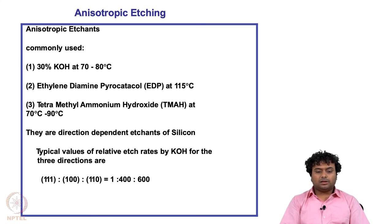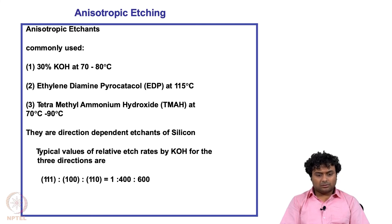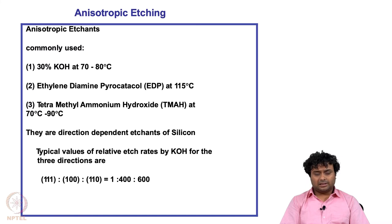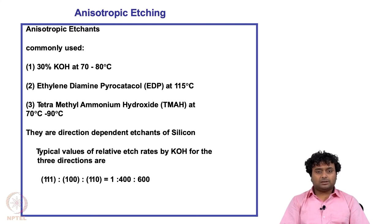For anisotropic etching we use KOH, which is a very popular anisotropic etchant. The mostly used concentration is 30 percent KOH at 70 to 80 degrees centigrade. Another etchant is EDP at 115 degrees centigrade, and we also have tetramethyl ammonium hydroxide, also called TMAH, at 70 to 90 degrees centigrade. KOH and TMAH are the most popular ones for silicon anisotropic etching.